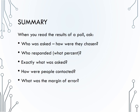In summary, when reading the results of a poll, think about the types of bias that might have occurred. Ask yourself: who was asked and how were they chosen? Who responded — was there non-response bias? Exactly what was asked, how was it phrased, and who did the asking? How were these people contacted? And finally, what was the margin of error, or what was the quantified random error that occurred in your study?